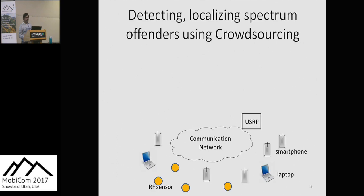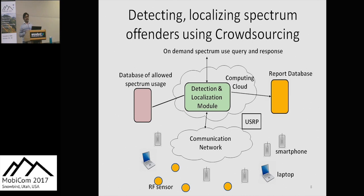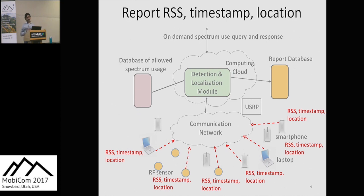We envision a novel approach that detects and localizes the spectrum offenders using crowdsourcing. We consider that a wide range of receivers would participate in the crowdsourcing, sense the RF medium, and report their sensed data to a detection and localization module located in the cloud. This module would run multi-source localization algorithms and find the location of currently active transmitters. Results can be compared with a database of allowed spectrum usage and any anomaly reported instantaneously. In our model, crowdsourcing devices report the received signal strength (RSS), the timestamp of the measurement, and the location of the receiver.